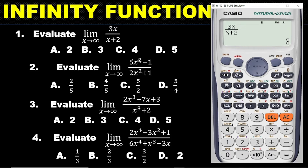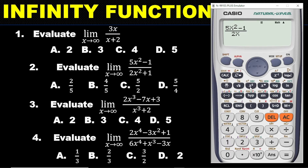Let's go to question two. We are to evaluate the limit of 5x² minus 1, all over 2x² plus 1, as x approaches infinity. You enter the expression on the calculator: hit the fraction button, then enter 5x² — so alpha x, then square it, minus 1. Go down and enter 2x² — so 2, alpha x, squared — plus 1.